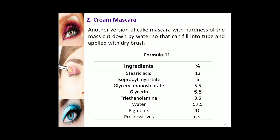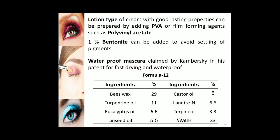Cream mascaras are normally packed into tubes to prevent drying. Waterproof mascaras use a hydrocarbon solvent to replace water, but because of that there may be chances of skin or eye irritations. Lotion type mascaras are available with good lasting properties and can be prepared by adding polyvinyl alcohol or film forming agents such as polyvinyl acid. One percent bentonite can be added to avoid settling of pigments by increasing the viscosity. Waterproof mascaras were patented by Kambersky for fast drying and waterproofing.